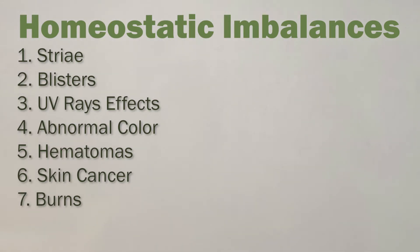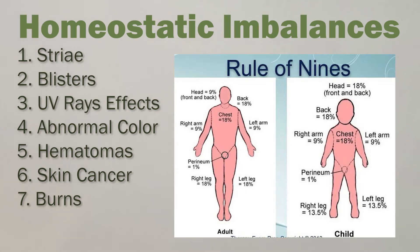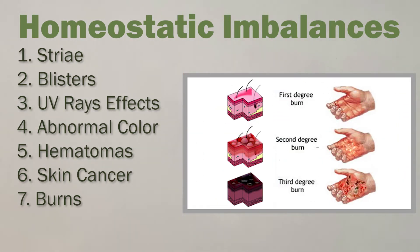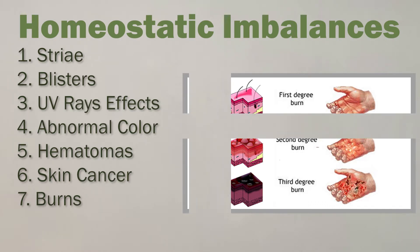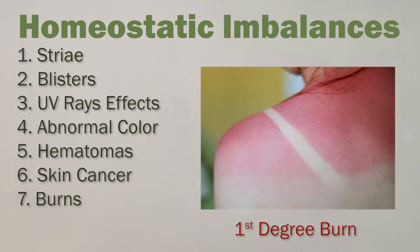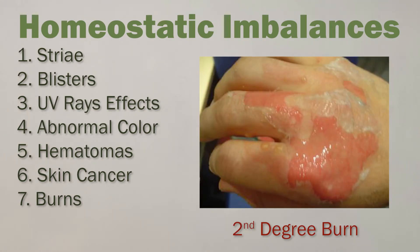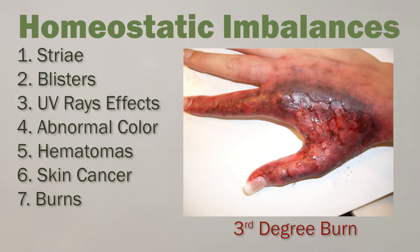Another thing that can happen to skin is burns. Using the rule of nines, a method that divides the body into 11 areas, each accounting for 9% of the total body's surface area. Burns are labeled as first, second, or third degree. First degree affects the epidermis — the top superficial layer. Second degree burns go down below the epidermis to the dermis. Third degree burns go all the way through the dermis to the underlying tissue.